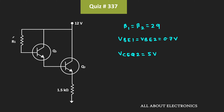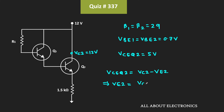We need to select R1 such that the collector emitter voltage of the second transistor equals 5V. Looking at the circuit, Vc2 = 12V, and Vceq2 = Vc2 - Ve2. Therefore Ve2 = 12V - 5V = 7V. So the required voltage at the emitter of the second transistor is 7V.